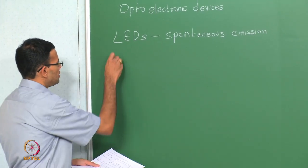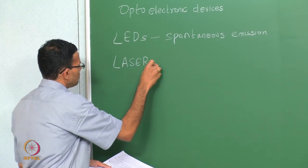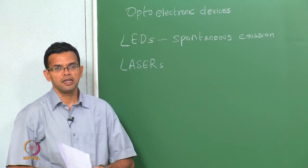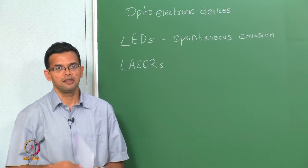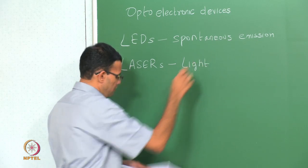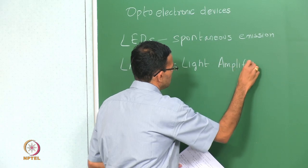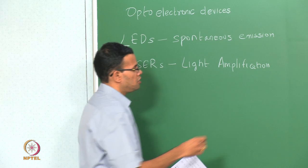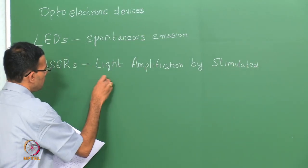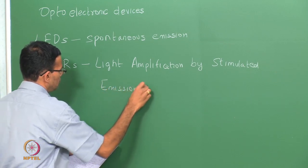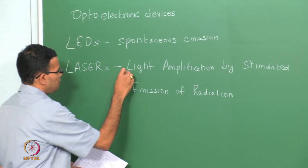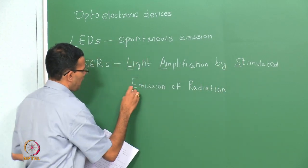Today we are going to look at lasers. Lasers are another example of an optoelectronic device where we have incident current introduced into the material — usually current is injected which produces light. LASER stands for Light Amplification by Stimulated Emission of Radiation. The first letter in each of these words comes together to give you the acronym laser.